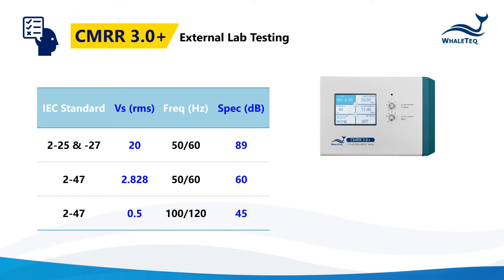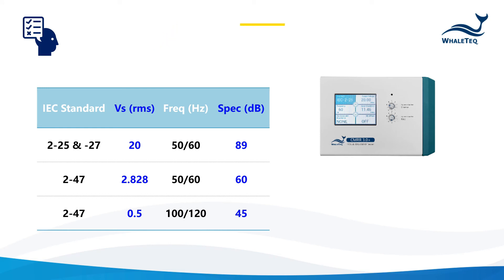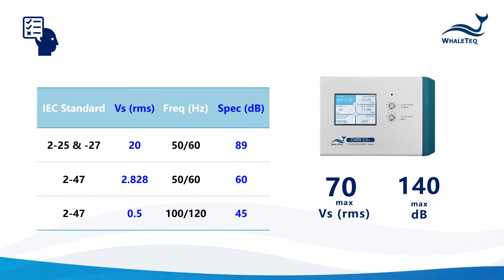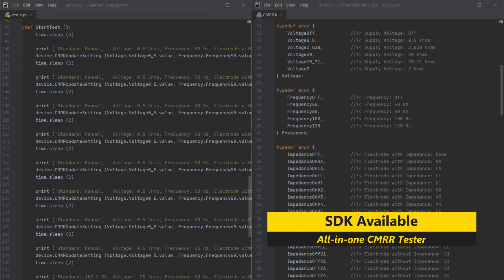Welltech's CMRR solutions are standard compliant and popular among certification laboratories, so you can use the CMRR 3.0 Plus with confidence. But our goal doesn't stop at helping you meet standards — we want to help you create the best possible medical device, not only meeting but exceeding existing CMRR standards. That's why CMRR 3.0 Plus provides a maximum of 70 volts RMS, demonstrating balanced CMRR of up to 140 decibels. We also have an SDK available for you to run customized test sequences to demonstrate your product best.